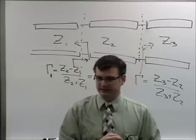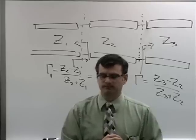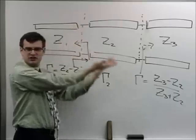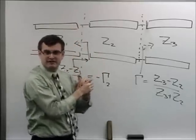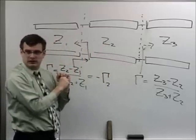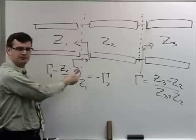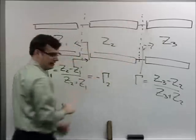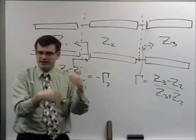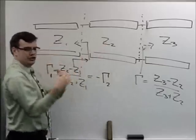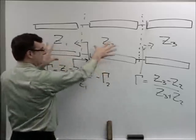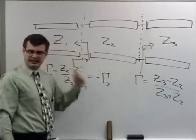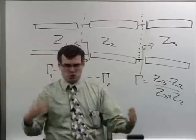If there is no impedance mismatch — Z₁ equals Z₂ — the reflection coefficient is zero, and you might as well model them as one long transmission line. If the two lines have the same impedance but different geometries, they might have different velocities of propagation, so when you trace the waveform down, you have to be mindful that it moves at different velocities on different segments — which can matter if you're trying to coordinate logic gates.